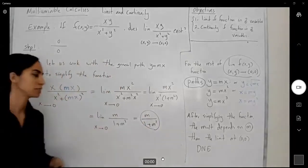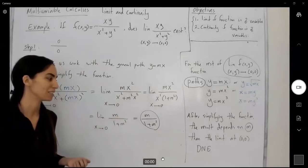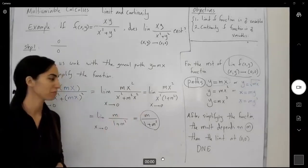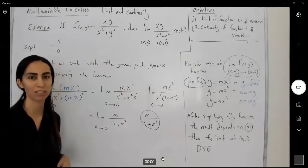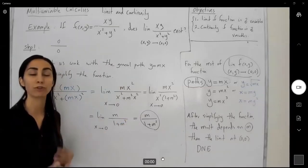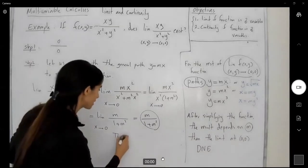What's the meaning of that? It means you can plug in different values for m. The limit depends on m. This contradicts the uniqueness of the limit. By plugging different values for m, you get different numbers for your limit. So that limit doesn't exist.